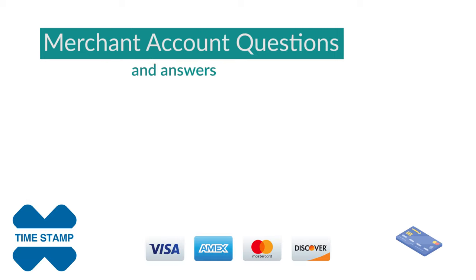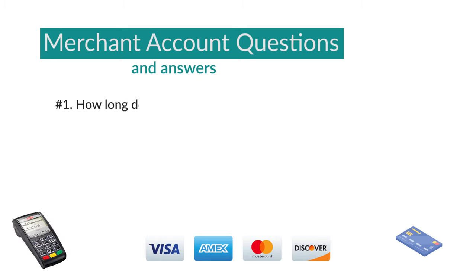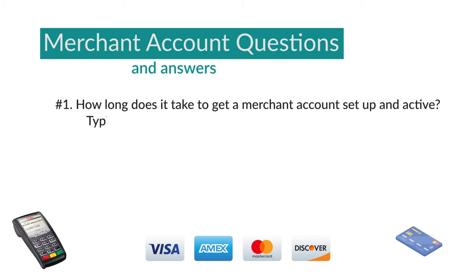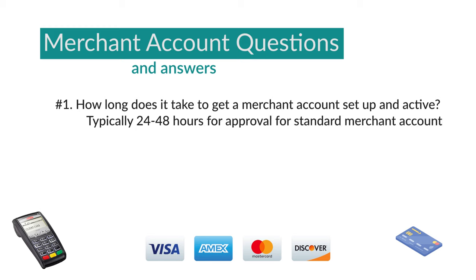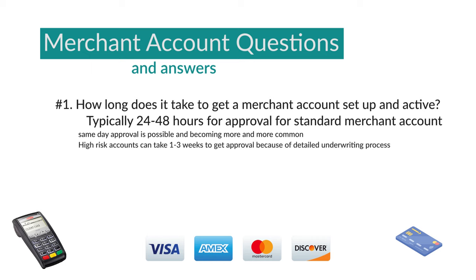Now let's look at some common questions about merchant accounts. How long does it take to get an account set up? Typically it ranges from about 24 to 48 hours for merchant account approval, and it is becoming more common to get same-day approvals with many providers. High risk merchant accounts typically can be approved in about one to three weeks, as the underwriting process is more in-depth and requires more application information.